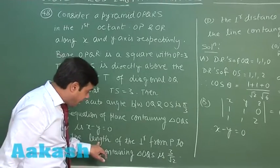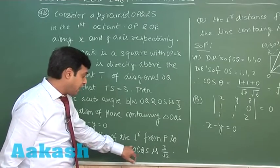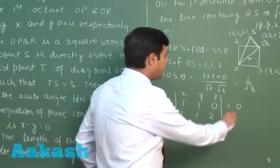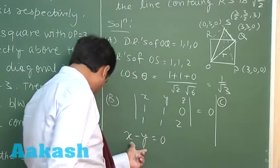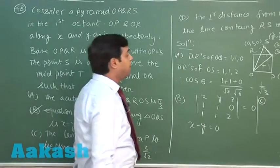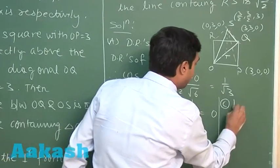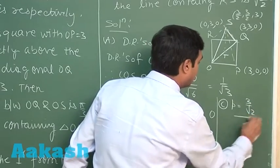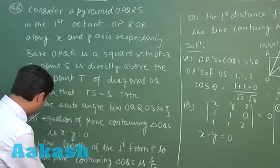For option C, the length of the perpendicular from P = (3, 0, 0) to the plane x − y = 0 containing triangle OQS. Substituting P into the plane equation gives the perpendicular distance as 3/√2. So option C is also correct.